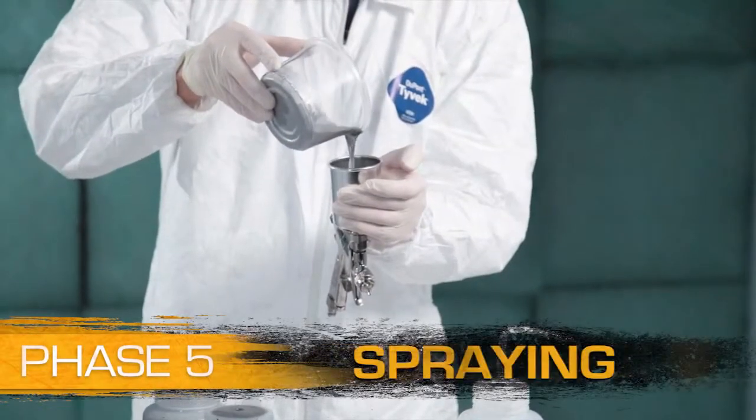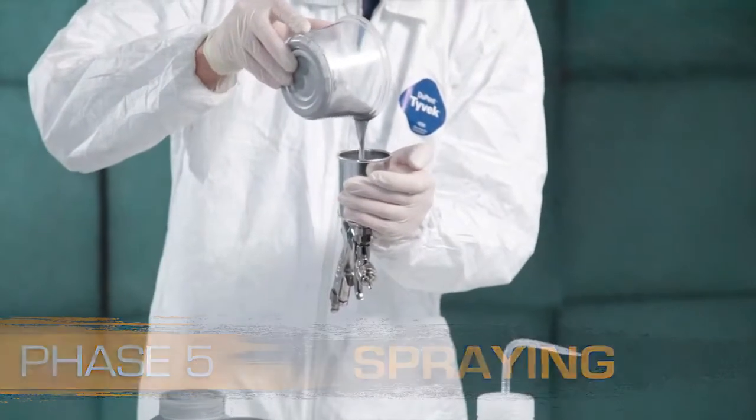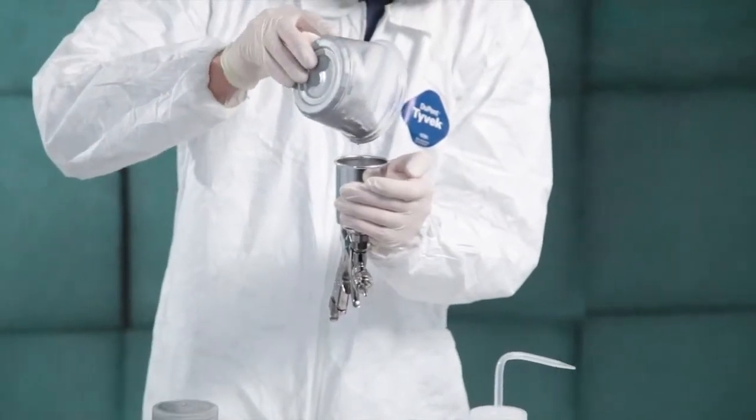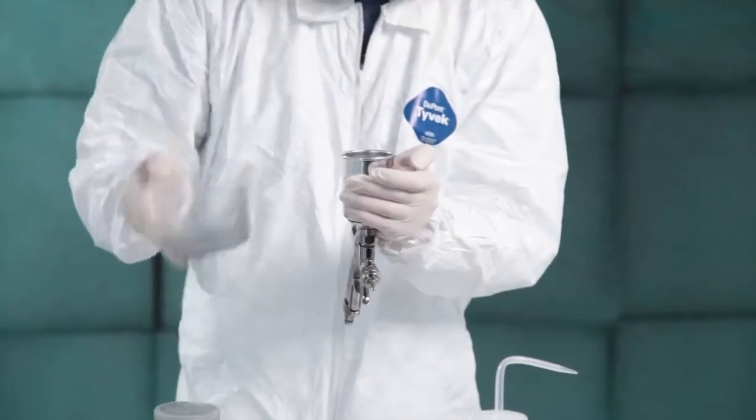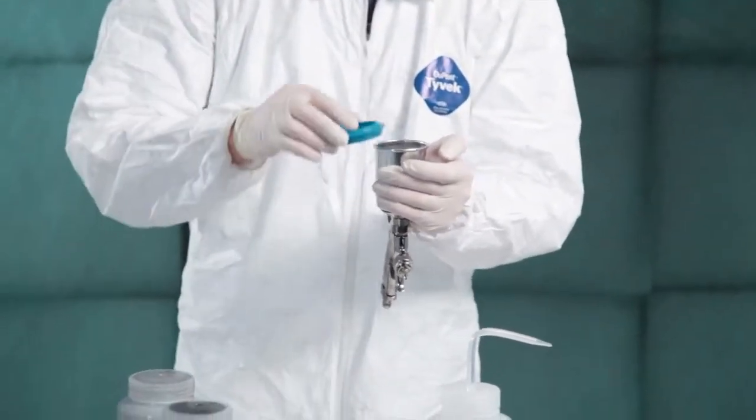Phase 5. Spraying. Pour the Cerakote into an HVLP gun with a 0.8 tip. 20-25 psi is the recommended air pressure for spraying Cerakote.